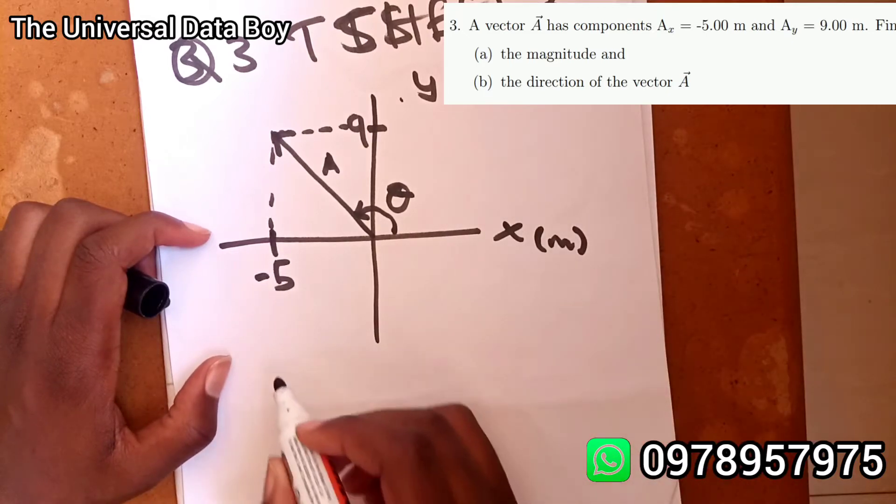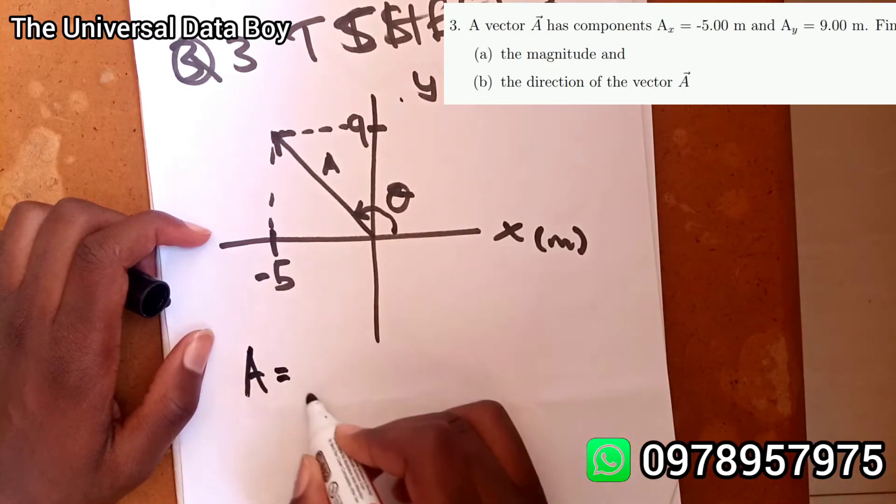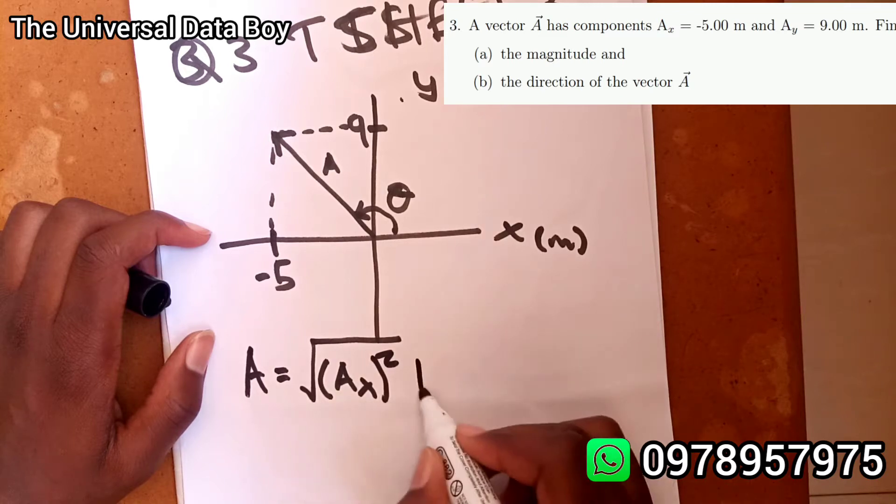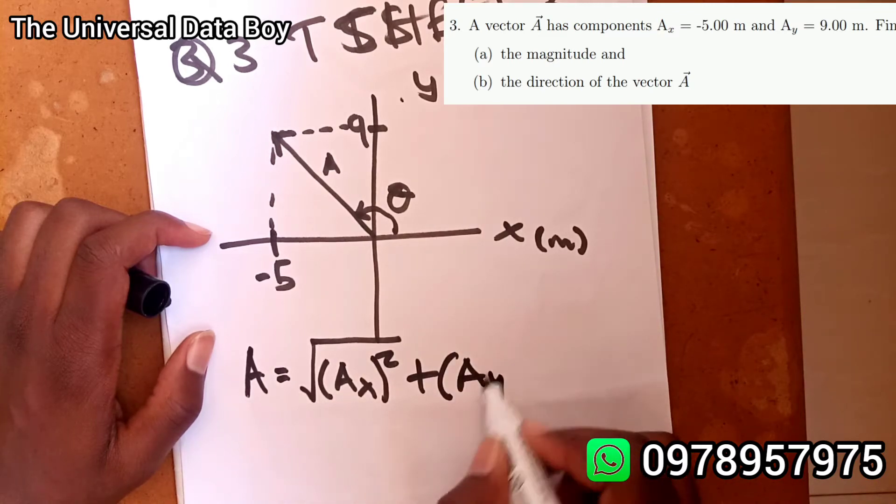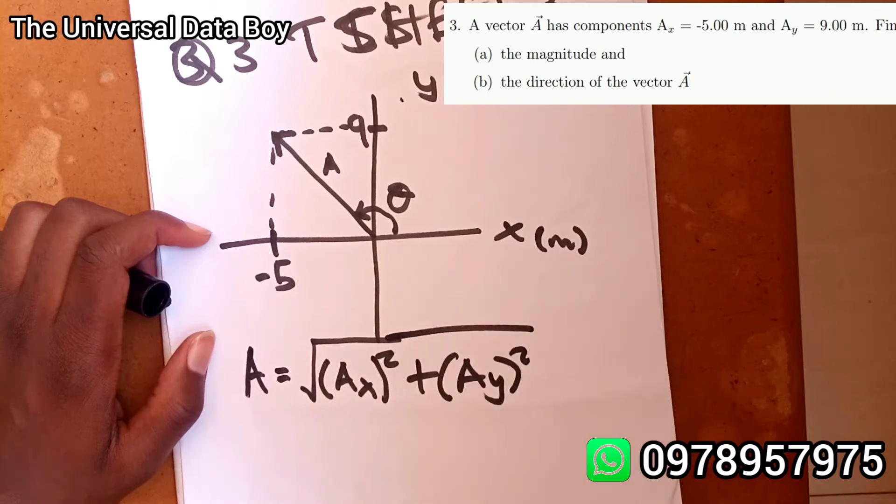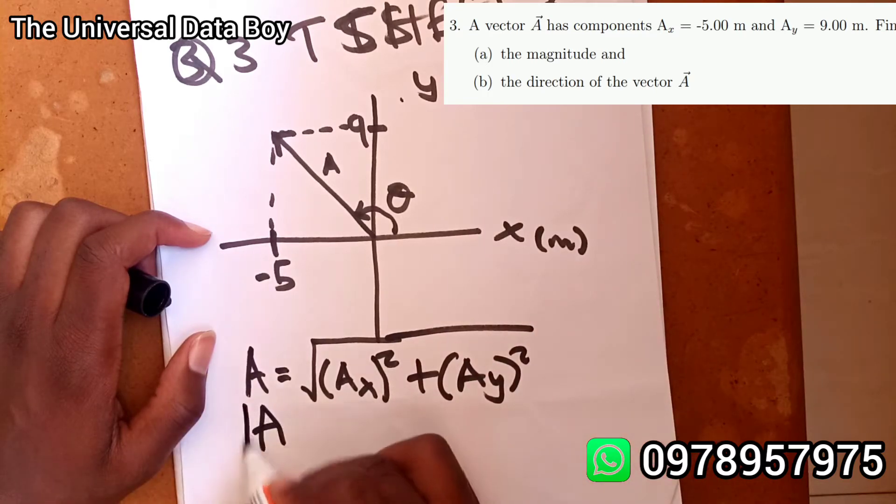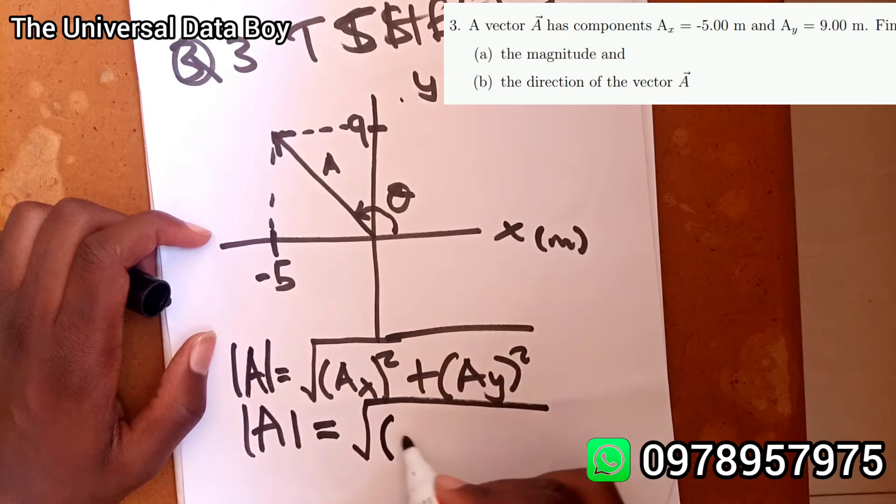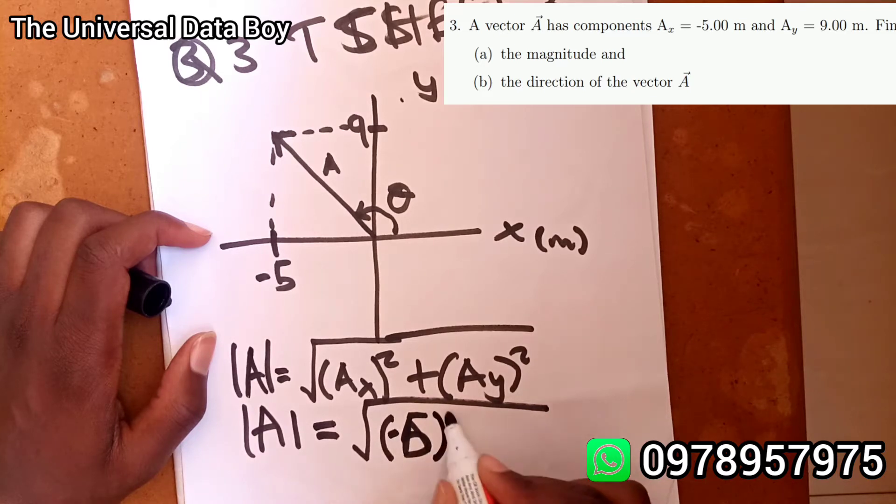We start with the magnitude formula. A will be equal to √(Ax² + Ay²). So the magnitude, this is the magnitude by row not the vector A. In the x, Ax is -5 squared plus A in the y is 9 squared.